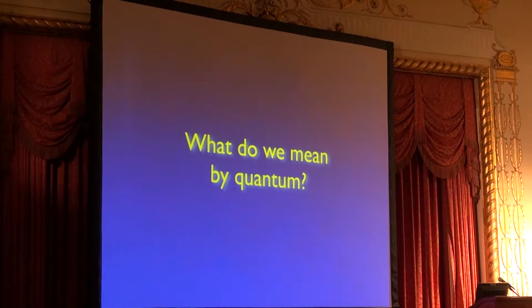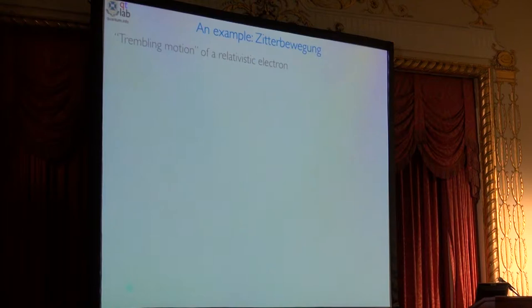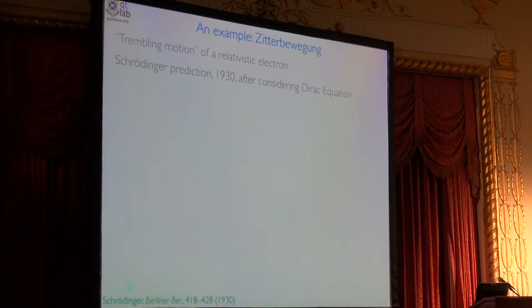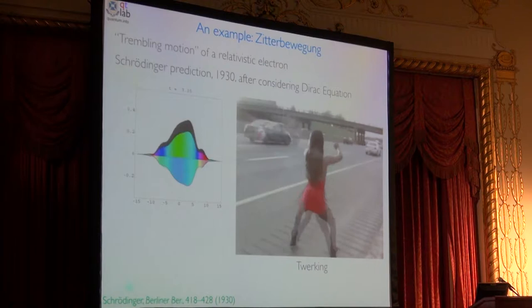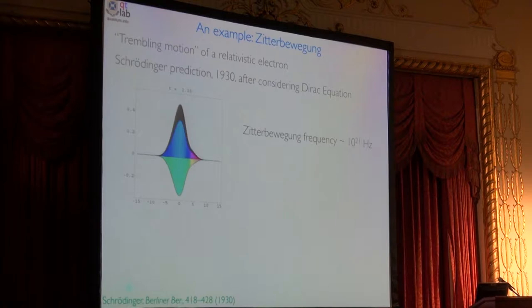So there was a question at the end of the last talk on Monday about what do you mean by quantum. So let's just deal with that for a second. My example for this is Zitterbewegung. This is the trembling motion of a relativistic electron. Schrodinger predicted it after basically eyeballing the Dirac equation because he was very clever. It looks like this. I was talking to Alain about it this morning and he could not pronounce Zitterbewegung. So I said, don't worry about Alain, just think of it as electron twerking.